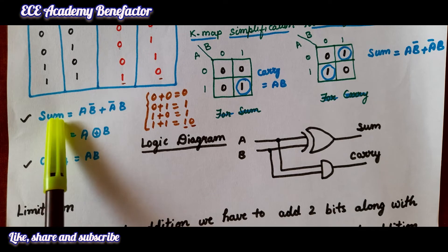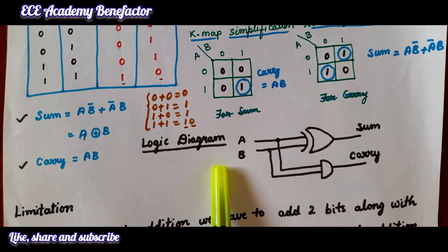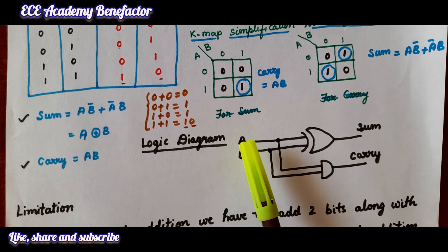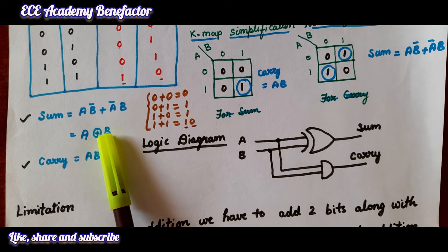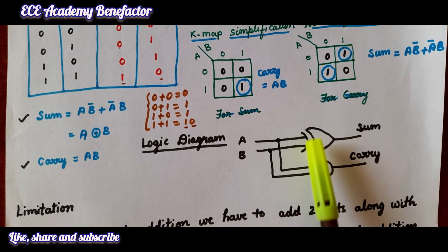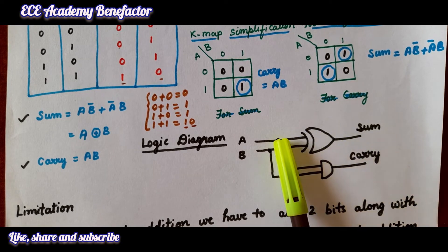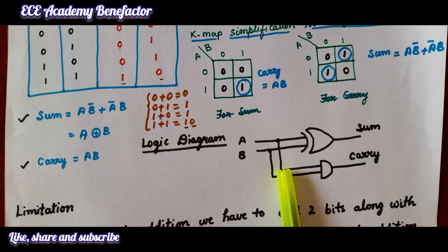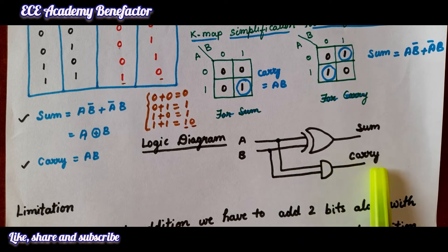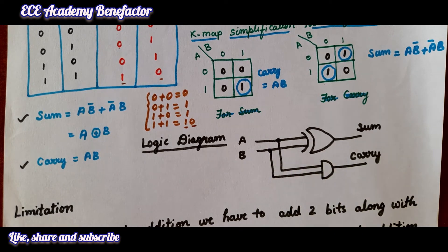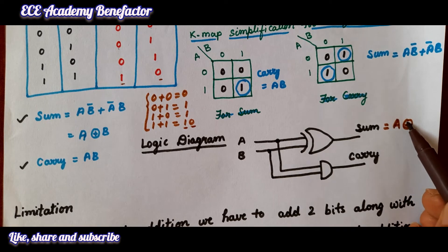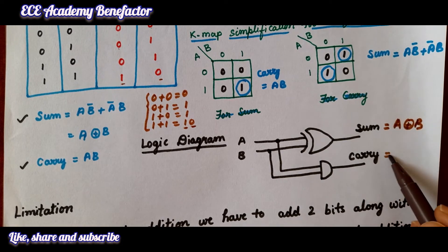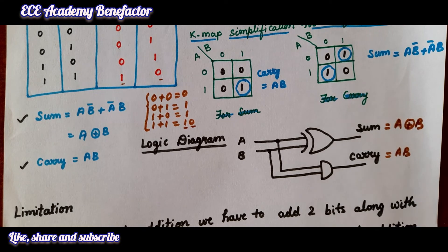We can now draw the logic diagram. The two inputs are A and B. To get the sum, we connect an XOR gate — the output of this XOR gate is the sum. To get the carry, we take A·B using an AND gate. So the sum expression is A XOR B and carry is A·B.